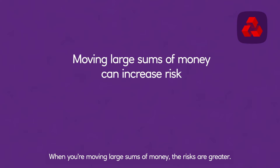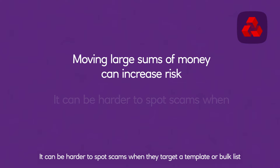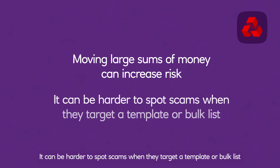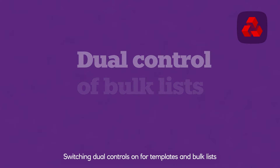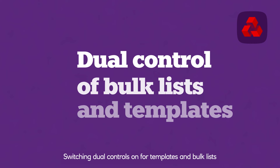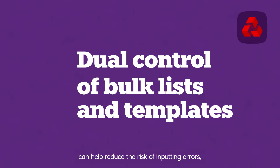When you're moving large sums of money, the risks are greater. It can be harder to spot scams when they target a template or bulk list, so having two pairs of eyes on these is especially valuable. Switching dual controls on for templates and bulk lists can help reduce the risk of inputting errors as well as enhancing your security.